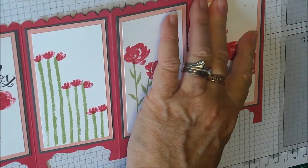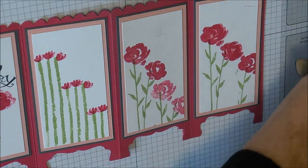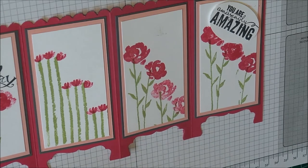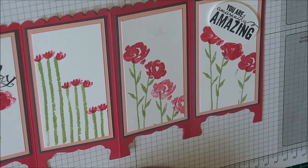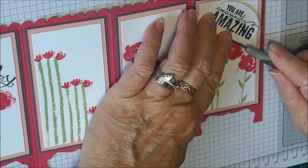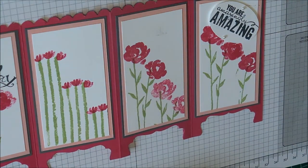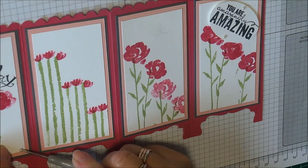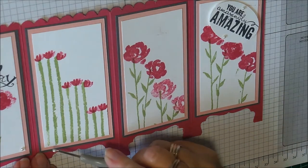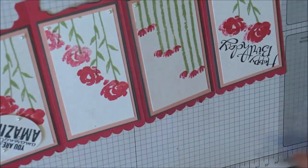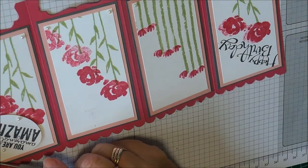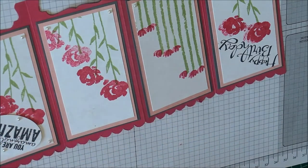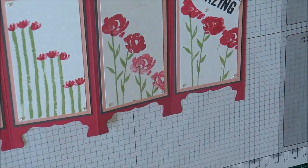Then I'm just going to take the back off these dimensionals. I've added it to this one here, and I'm just going to add a few pearls. I'll just add these small pearls to the sentiment top and bottom. Then you can add the pearls to each panel, so I'm just adding them to the corners of each piece of Whisper White. Just turn it around so I can get to the other side quickly and easily. I'm just using the medium size pearls.